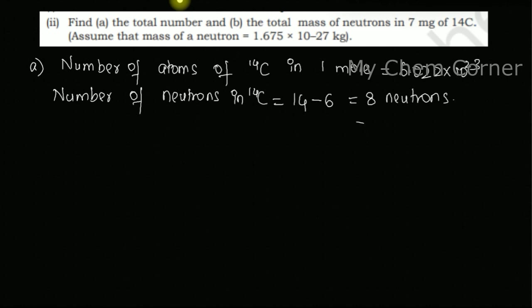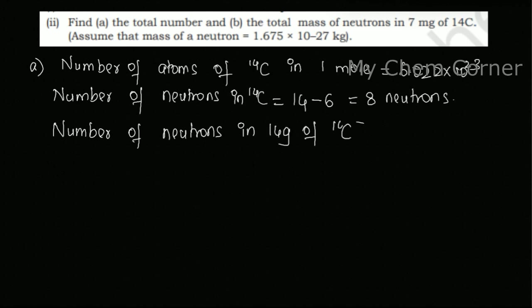So if I want to find the number of neutrons in 14 grams of Carbon-14 isotope, this will be equal to Avogadro's number multiplied by 8, which is the number of neutrons per atom. Here, 14 grams is the molar mass since we're using the Carbon-14 isotope.